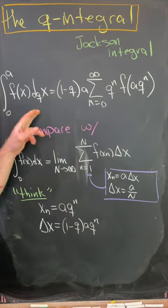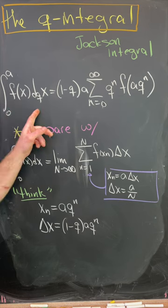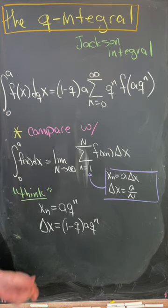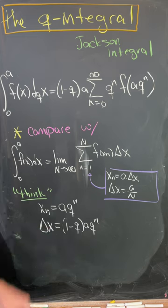So the quantum integral from 0 to a of f(x) dqx is equal to (1 - q) times a times the sum as n goes from 0 to infinity of q to the n times f evaluated at a times q to the n.